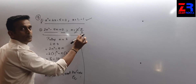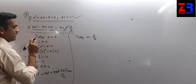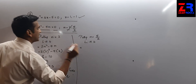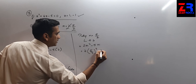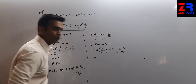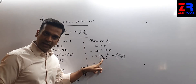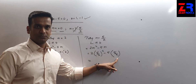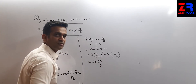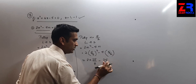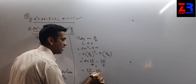Putting m = 5/2 in the left-hand side: 2m² minus 5m = 2 into (5/2)² minus 5 into (5/2). So 2 into 25/4 minus 25/2 = 50/4 minus 25/2 = 25/2 minus 25/2 = 0.